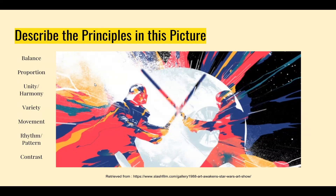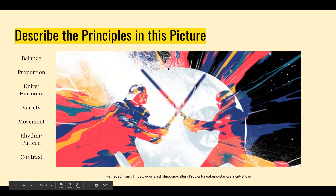Proportion refers to how large or small parts of the picture are in relation to each other. For example, if Darth Vader had a super big head, he would be out of proportion because the size of his head would not fit with the size of his body. The proportions of the figures in this picture are even. However, the proportion of the figures to the Death Star in the background are not the same — they are on a different scale, because of course Luke Skywalker and Darth Vader are much smaller than the Death Star.